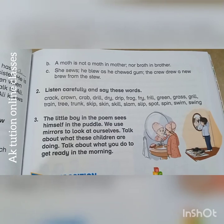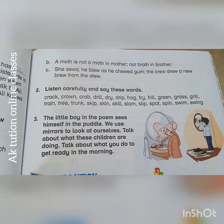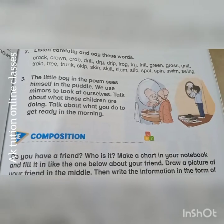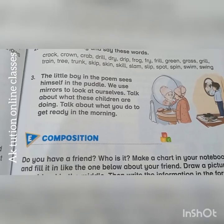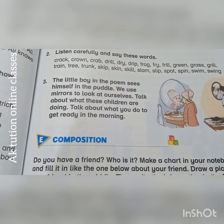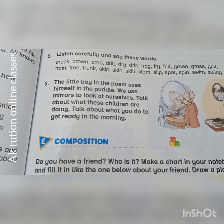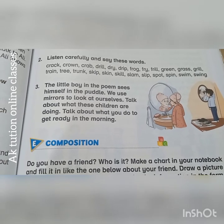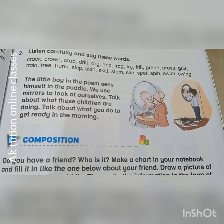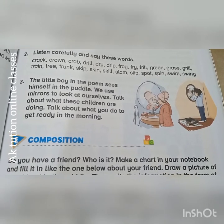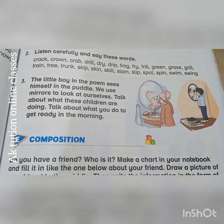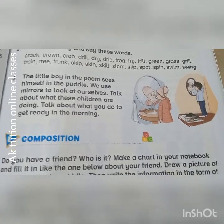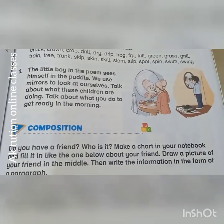Now you will write a sentence in your own words. I will guide you a little bit. You can write: I wake up in the morning at 7:30. I brush my teeth and then wear my uniform. I look into the mirror and comb my hair. Then I wear my shoes and wait for my van. The van comes and I sit in the van and go to school. You can write it in your own words.